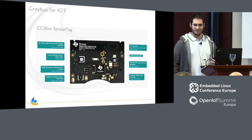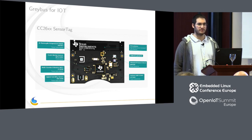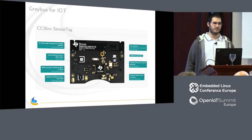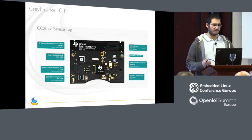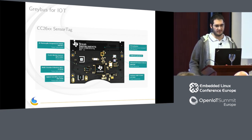My goal was to have a demo for this talk. Unfortunately I've been stuck with Bluetooth — I wasn't able to make it work on this board. But it's still a good example of what we can do with Greybus. On this board there are plenty of sensors. This board was made by TI for IoT and there is a motion sensor, a pressure sensor, and some other kinds of sensors. Most of these sensors are on the I2C bus. With Greybus, we could use them directly on the host.